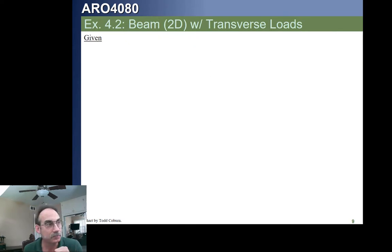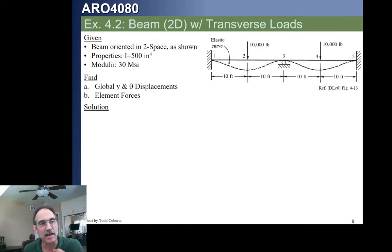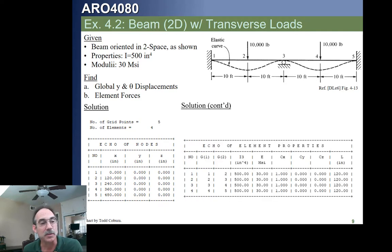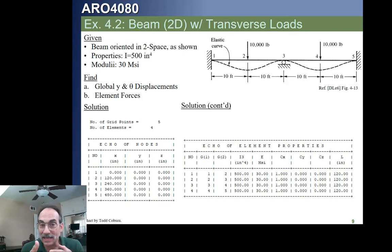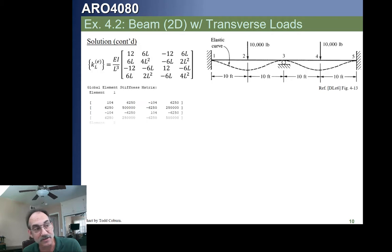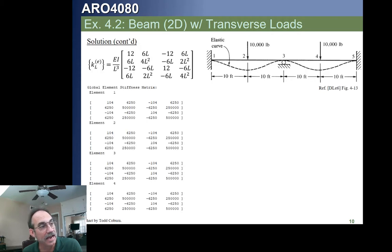Let's look at an example. We have a beam with two fixed supports, one pin support, and two external loads. I like to echo the input information: where all my grid points are and what elements we have. We can now write our local stiffness matrix for each element using the beam bending stiffness equation. That gives us the element stiffness matrices.